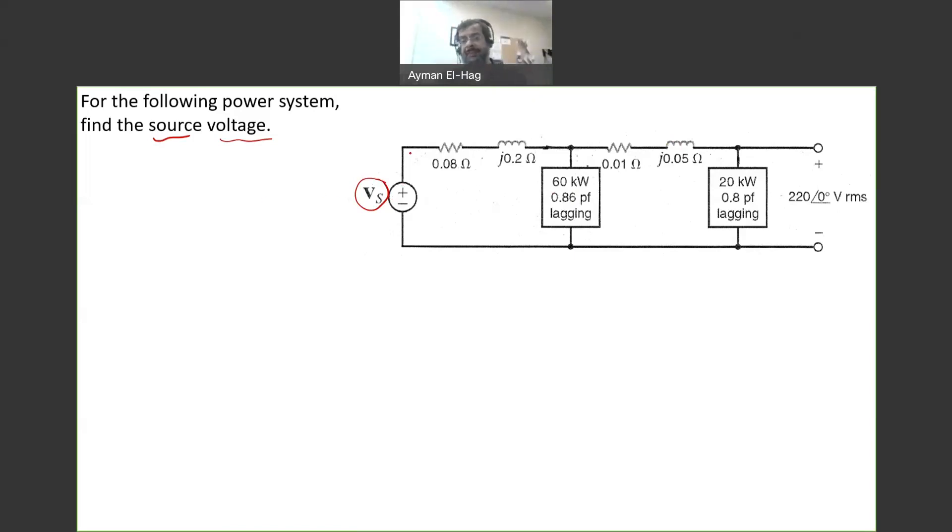If you want to put this in the context of a real power system, this is the substation, this is the cable or overhead line. There is a load—could be a house, could be a factory—then there is another cable moving to another house. So the only difference here in this question, compared to question number two, is having an impedance inserted between these two loads.